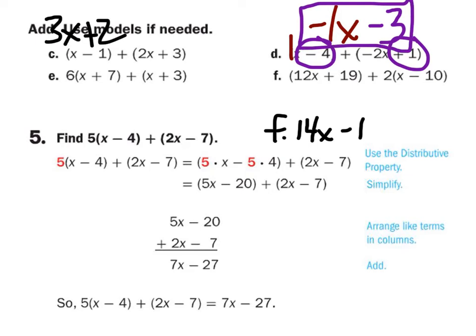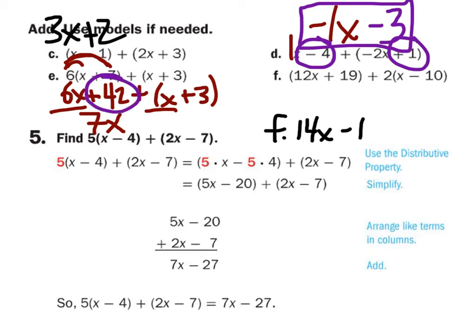Finally, with E, you can't do is distribute the 6. So, 6 times x is 6x plus 6 times 7, which is 42, plus x plus 3. So I've got this 6x and this 1x, which would give me 7x's. Then, if I've got 42 coins and 3 coins, I'd have a total of 45 coins. Done.